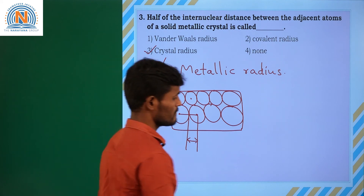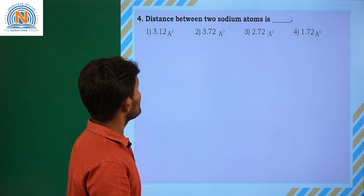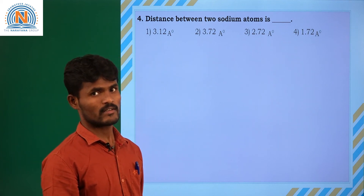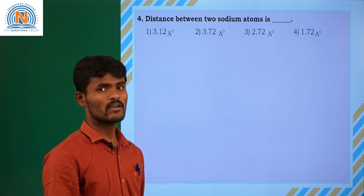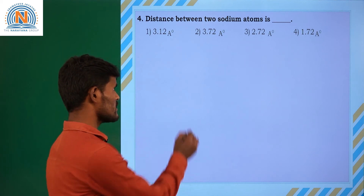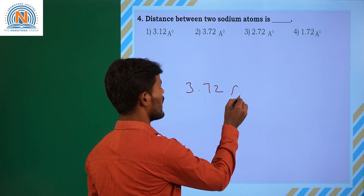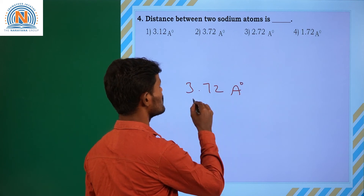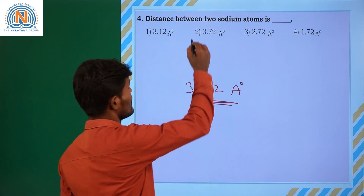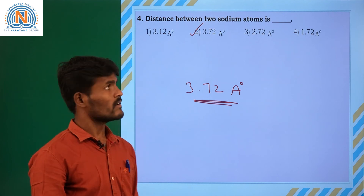Fourth question: the distance between two sodium atoms is 3.72 angstroms. So the answer is the second option.